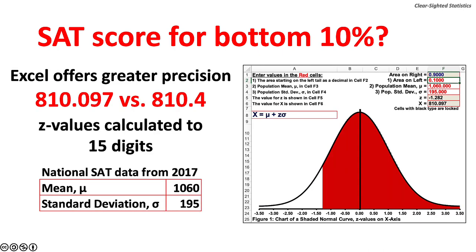Excel offers greater precision because it provides more precise calculations of the z-value than the area under the curve table. The required SAT score for the bottom 10% is 810.097 using Excel, compared to 810.4 found using the area under the curve table.